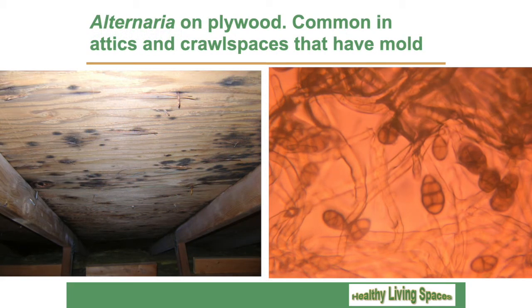This is a picture of Alternaria growing on plywood in an attic. When you see black spots on wood in an attic, it's often either Cladosporium or Alternaria. It can be Aspergillus or Penicillium about 50% of the time. There's some Alternaria attached to the hyphae, the roots.